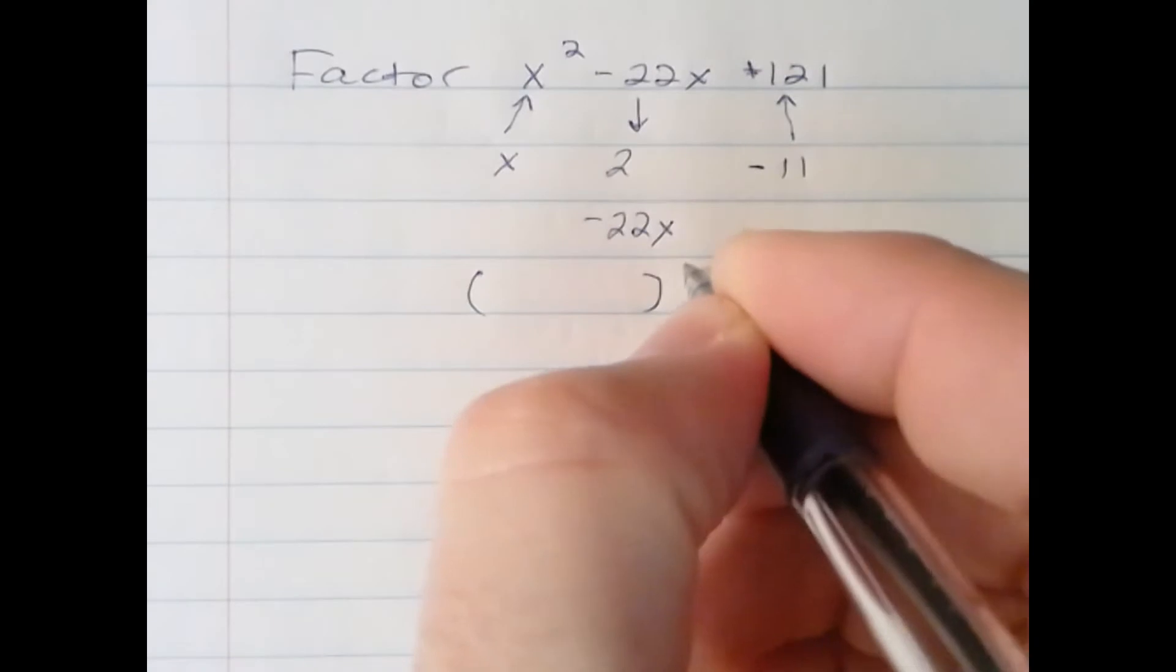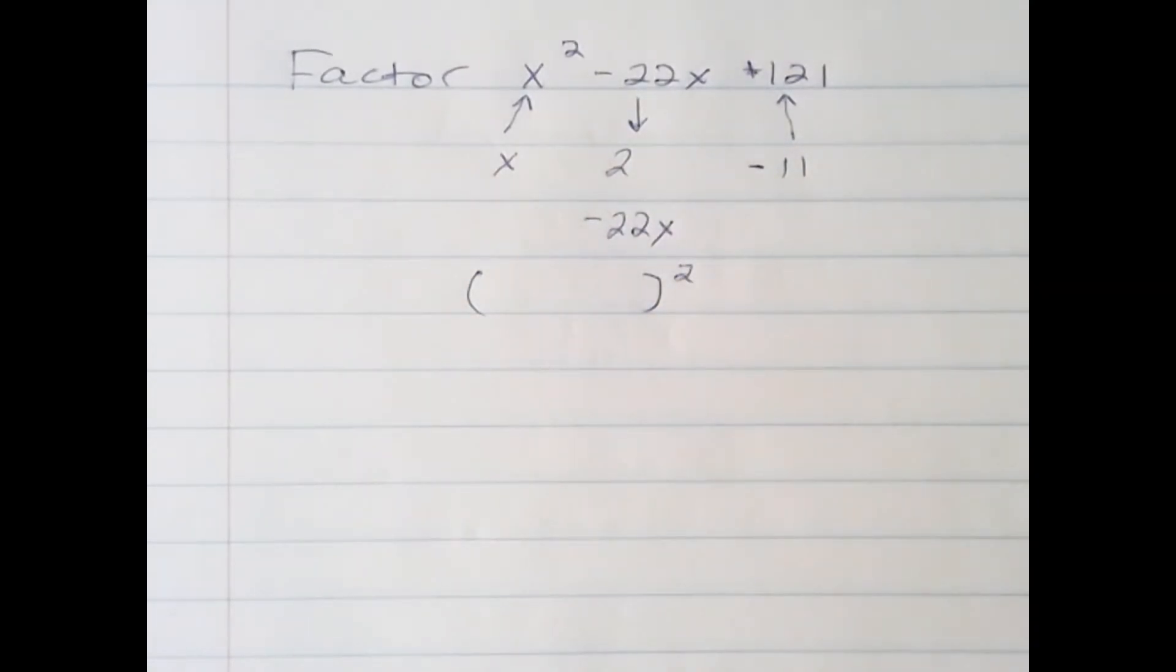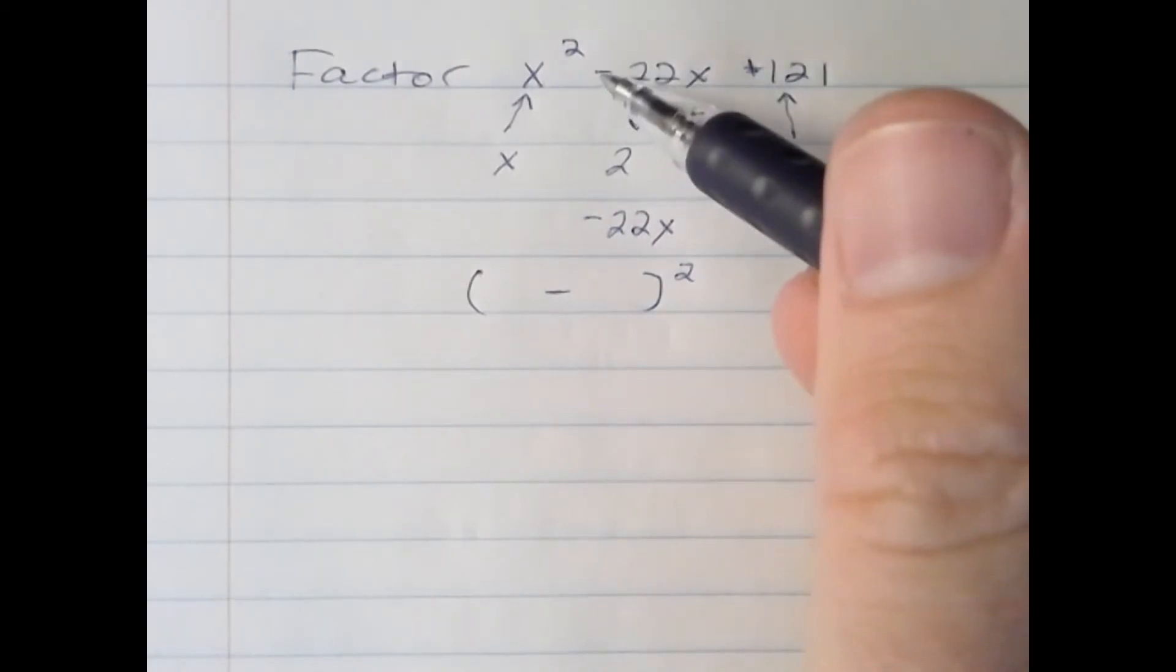The setup is easy for the factored form. It will be a quantity squared. The two terms will be separated by a minus, given that it is a difference from the first term.